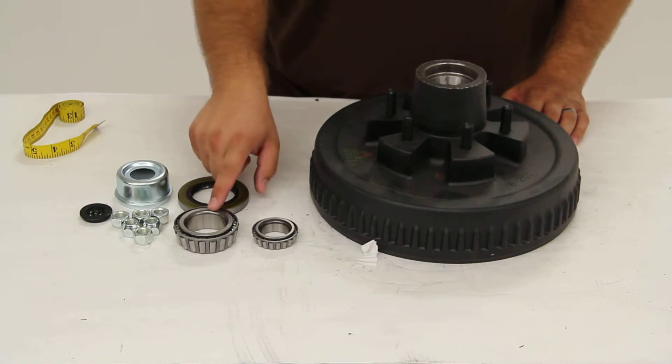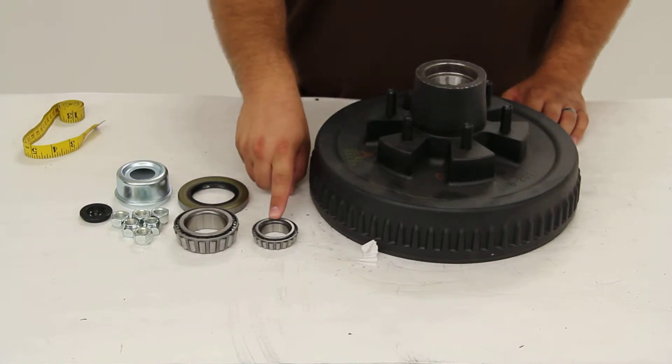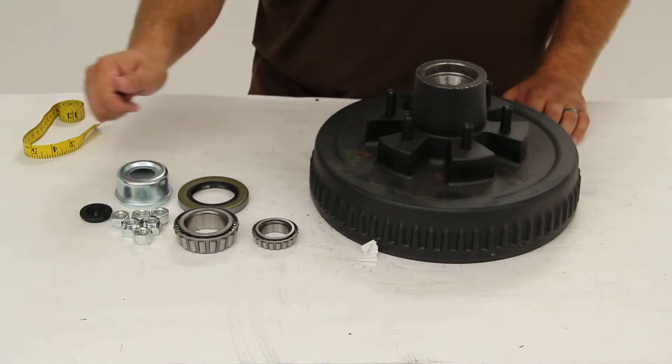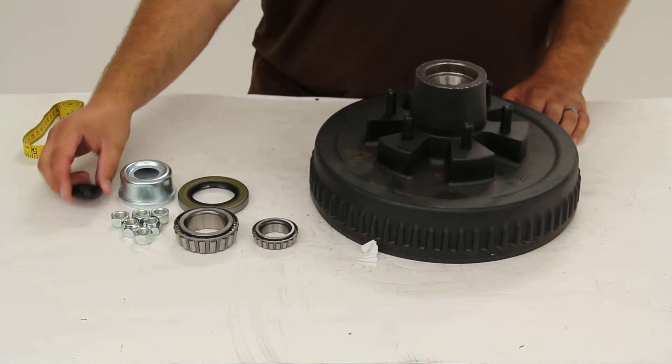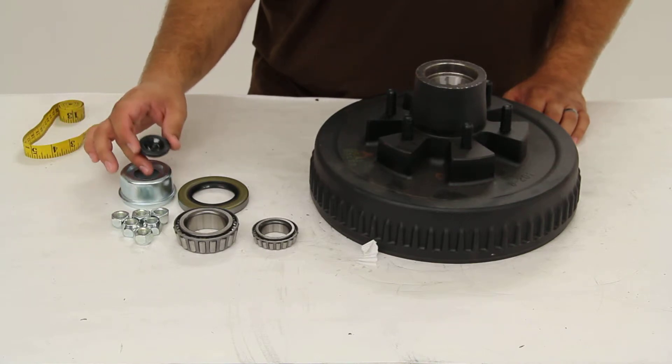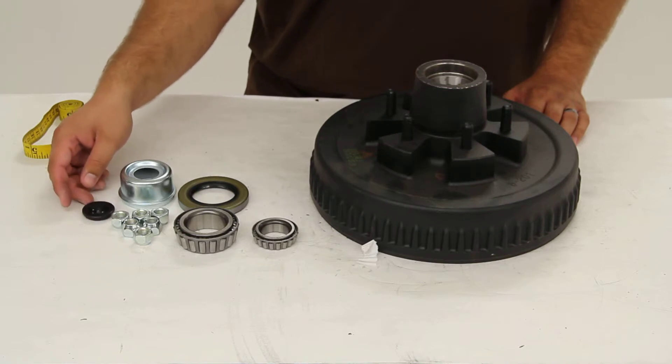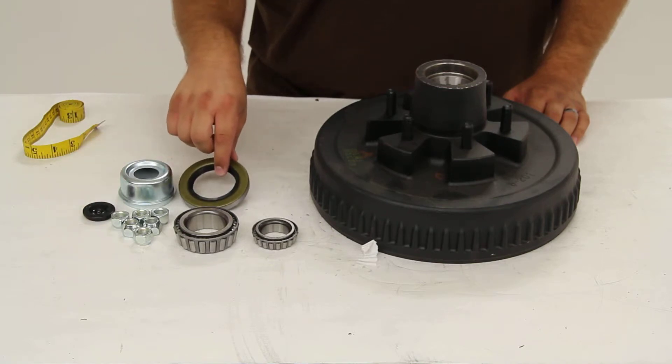You've got your inner bearing, number 25580, your outer bearing, number LM67048, six conical lug nuts, a grease cap with a removable rubber plug so that you can access the zerk fitting on the end of your easy lube spindle, and finally the grease seal.